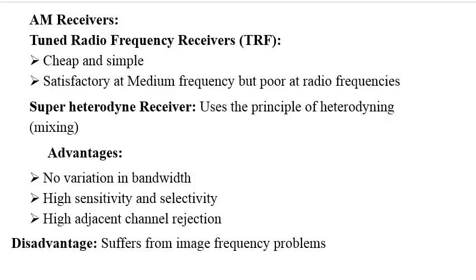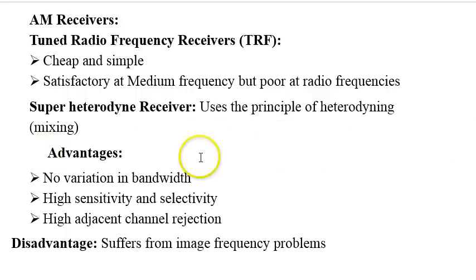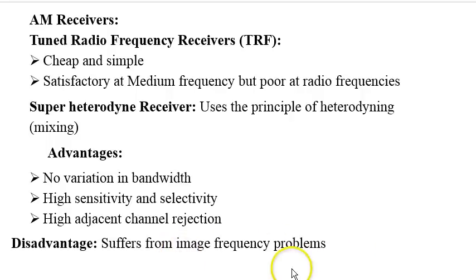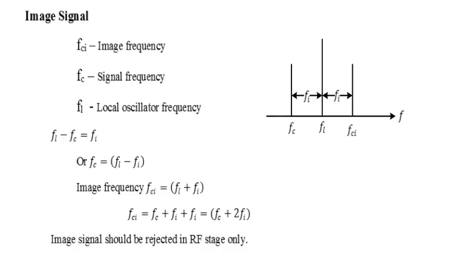Regarding AM receivers, two common types exist: tuned radio frequency (TRF) receivers — earlier models that are cheap and simple but satisfactory only at medium frequencies and poor at radio frequencies — and the superheterodyne receiver, which is the ideal receiver. The principle of heterodyne means mixing. Advantages of superheterodyne receivers include no variation in bandwidth, high sensitivity, and high selectivity. One important disadvantage is that it suffers from the image frequency problem.